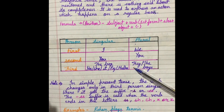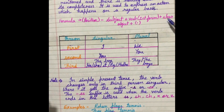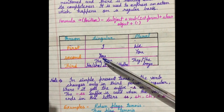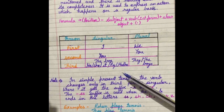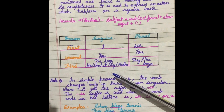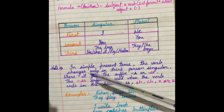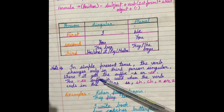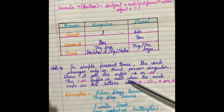I am telling you where we have to use s or es with the verb — only with third person singular. In third person singular: the boy, he, she, it, Raj and Madhu. These are third person singular. If these words are used at the place of subject, then we use s or es with the first form of the verb. In simple present tense, the verb changes only in third person singular, where it gets the suffix s or es.